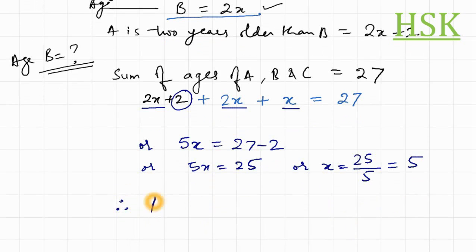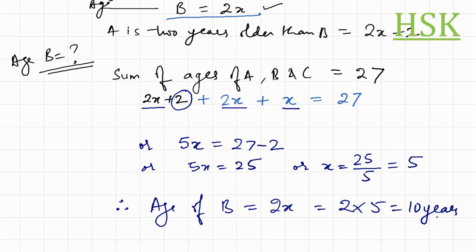Therefore, age of B, which was equal to 2X, will be equal to 2 times 5, that is equal to 10 years. So this is our required answer.